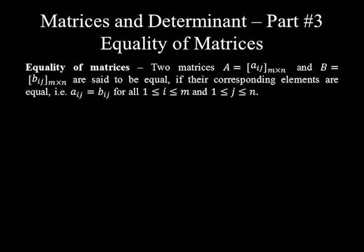Two matrices A equal to A sub ij with an order m by n, and B equal to B sub ij with an order m by n, are said to be equal if their corresponding elements are equal — that is, A sub ij equal to B sub ij for all 1 ≤ i ≤ m and 1 ≤ j ≤ n.